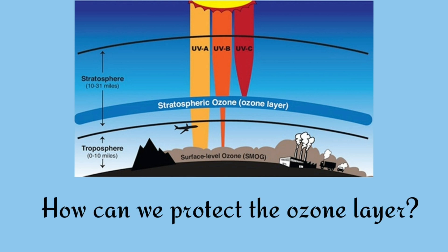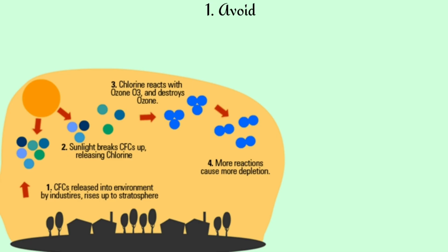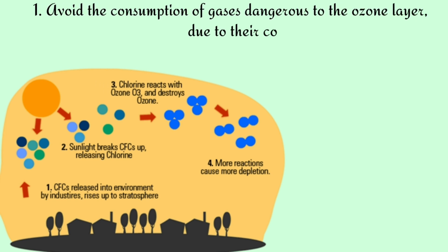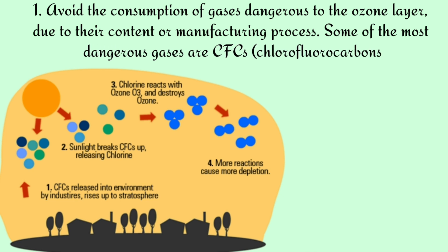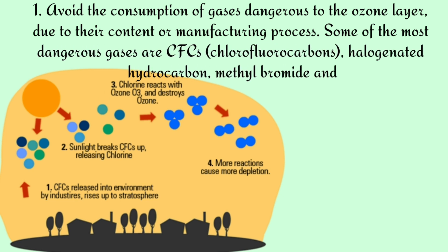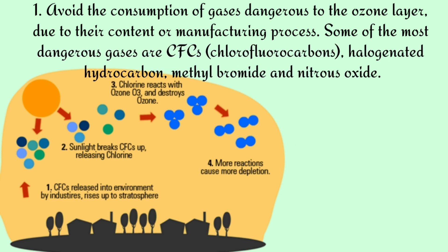How can we protect the ozone layer? Avoid the consumption of gases dangerous to the ozone layer due to their content or manufacturing process. Some of the most dangerous gases are CFCs (chlorofluorocarbons), hydrogenated hydrocarbons, methyl bromide, and nitrous oxide.